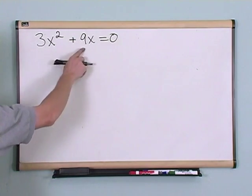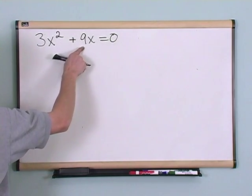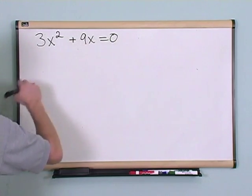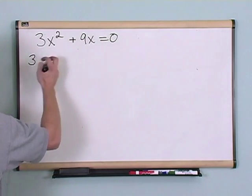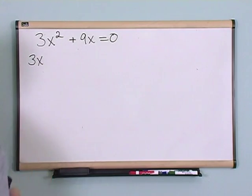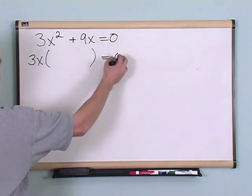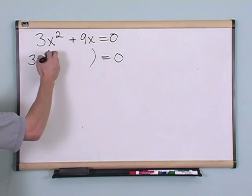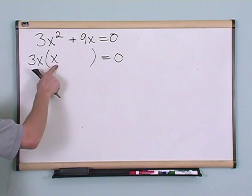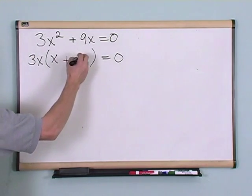What's common between this term and this term? I've got a 3 here, and I've got a 3 kind of wrapped up in 9. So I'm going to factor a 3 out, and then here, I've got an x squared and an x. x is common to both of those, so I can pull an x out. And then I need to make some parentheses and figure out what goes in the middle. What goes here is just simply x, because 3x times x gives me x squared. And then over here, all I need is a 3.